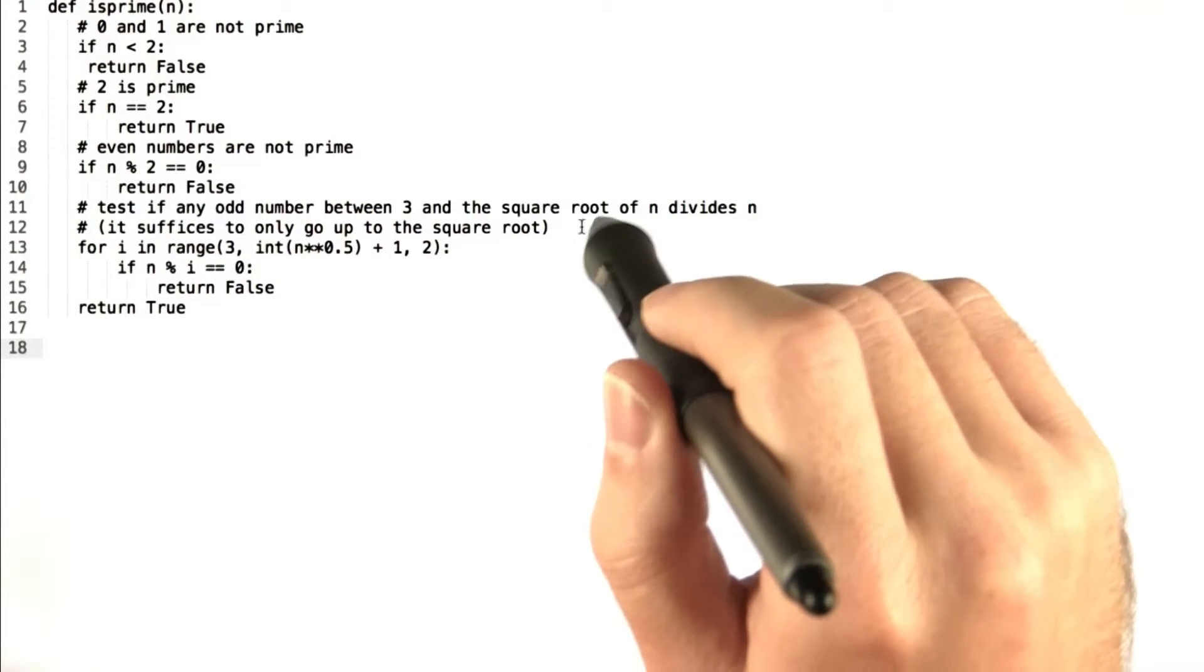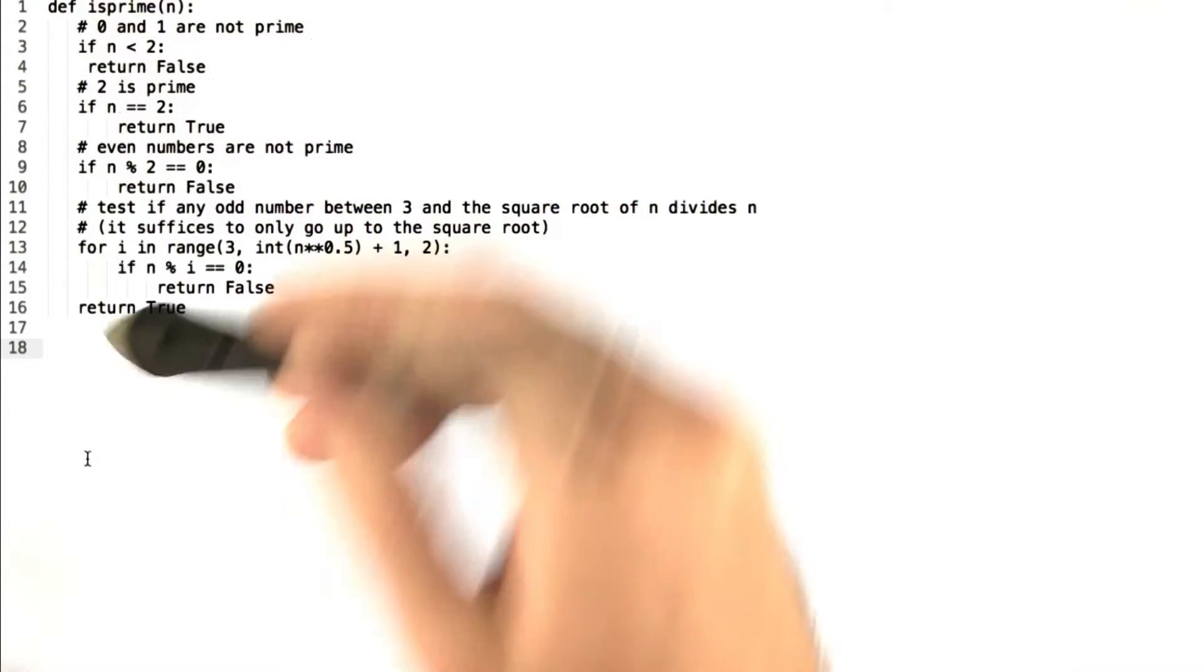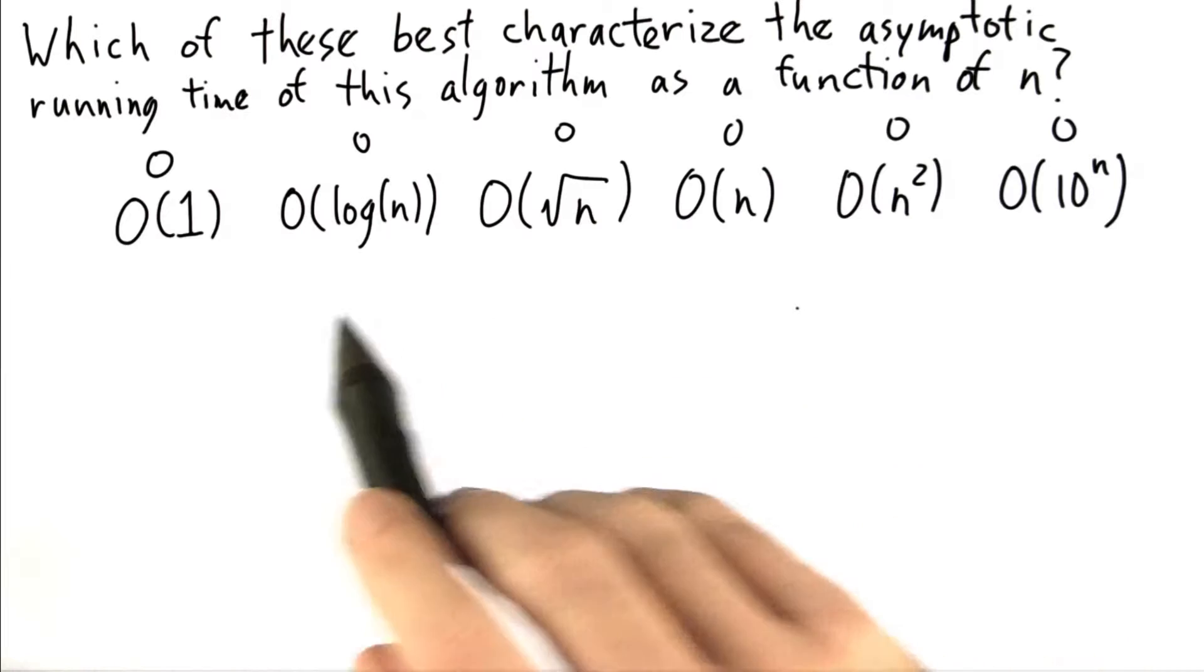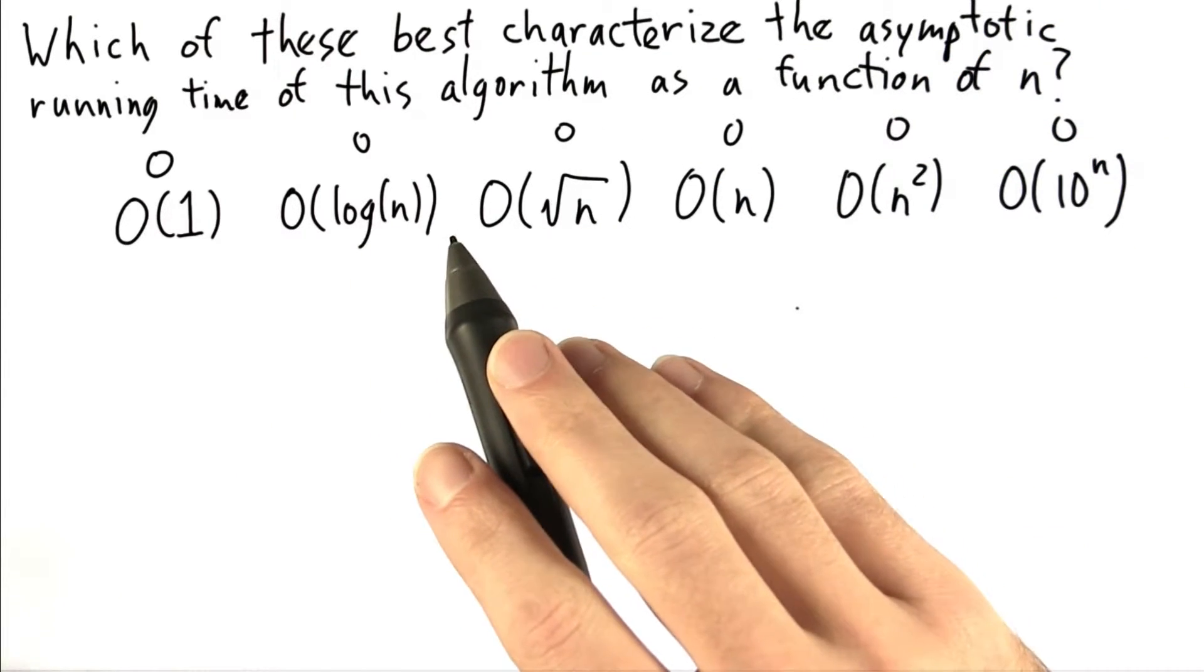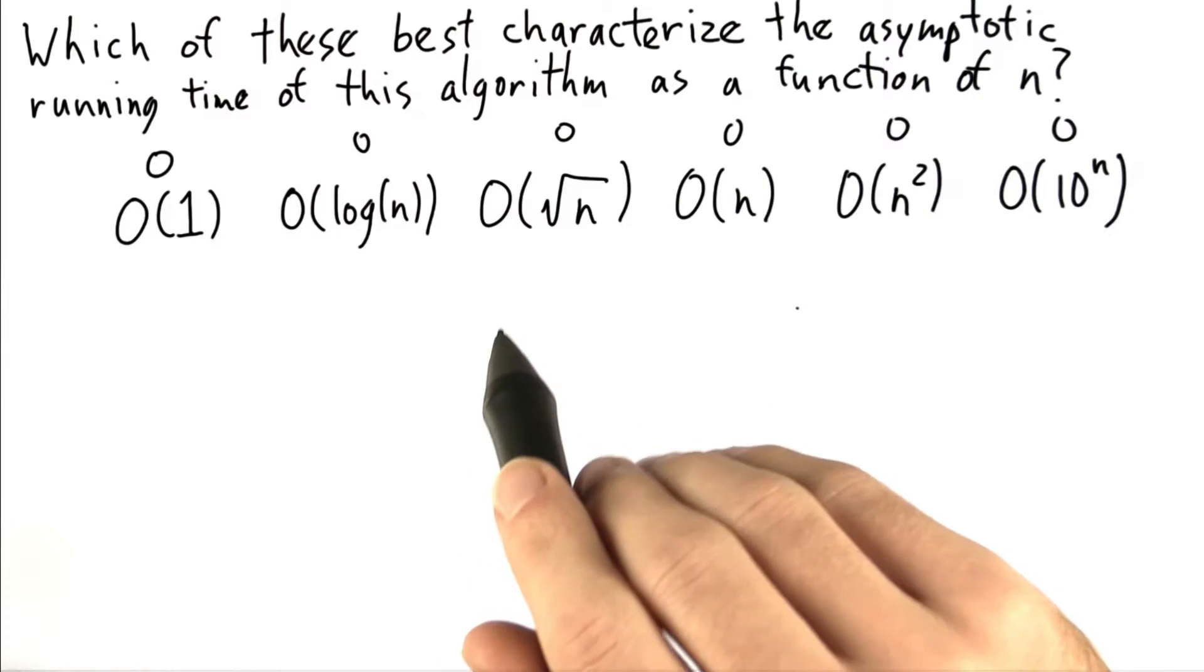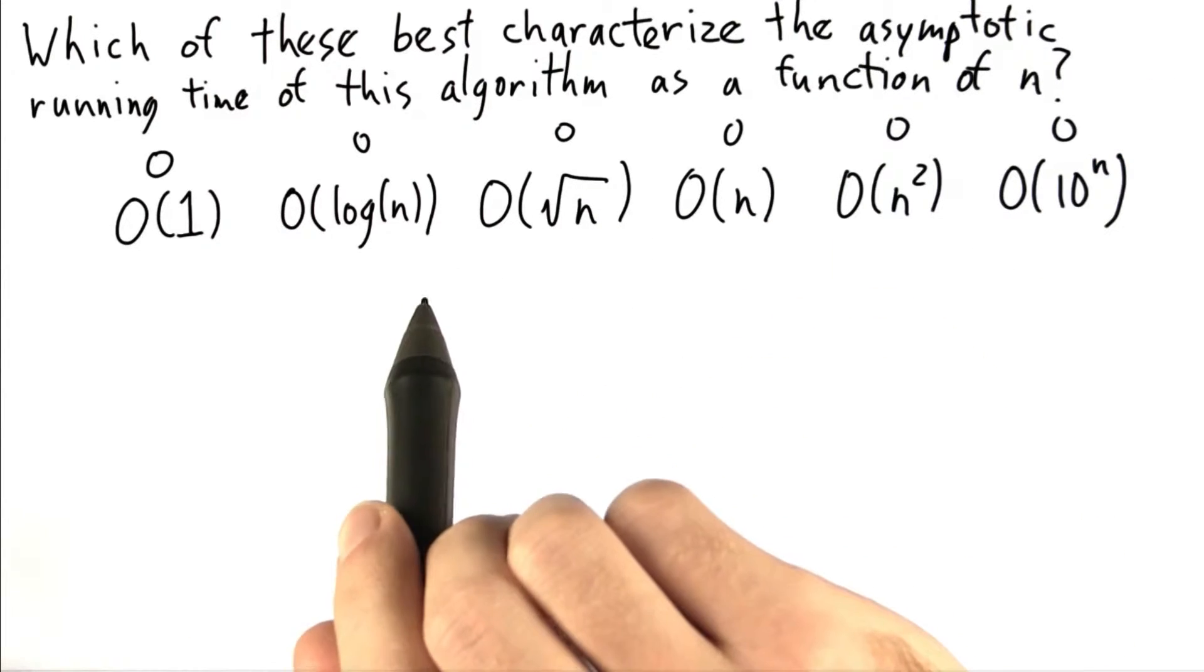But if it finds any numbers that divide n, then we return false. And otherwise, we fall all the way through this and return true. So my first question is: which of these answers best characterize the asymptotic running time of this primality algorithm as a function of n, the value of the input size?